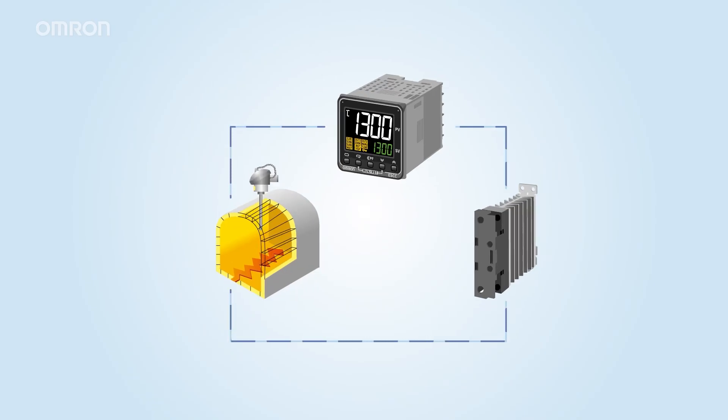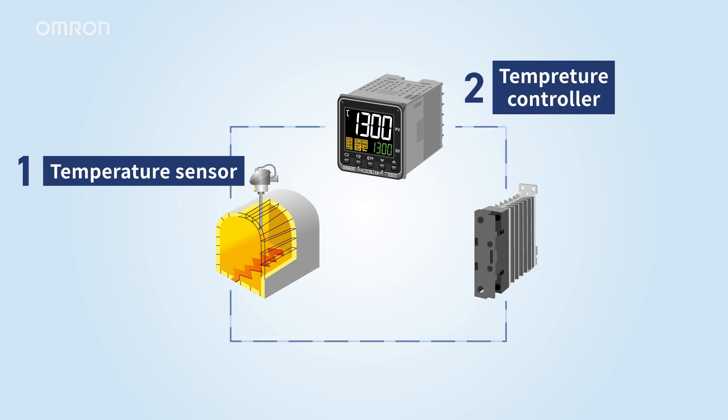First, let's explore the essential equipment for temperature control. The main component is a temperature sensor that precisely measures the area to regulate. You'll also need a controller that compares the sensor's reading with the set point and sends a signal to manage the heater. Additionally, a heater and an output device to control it are used.